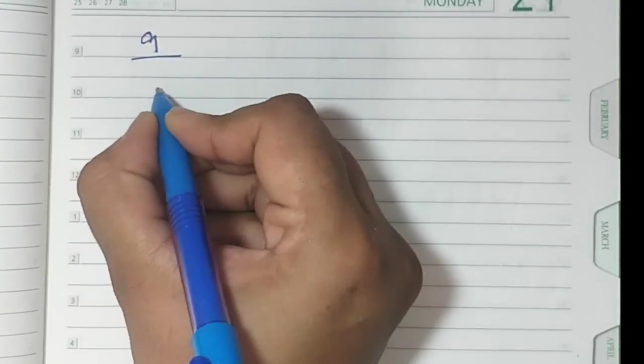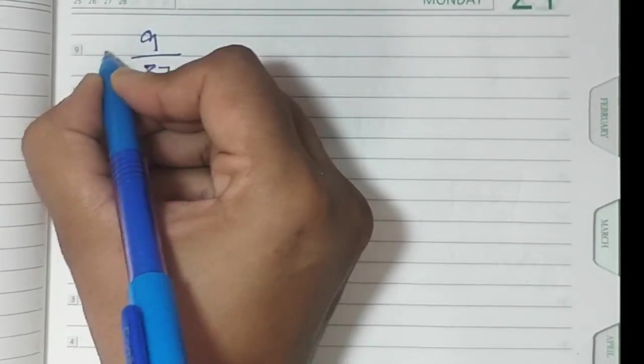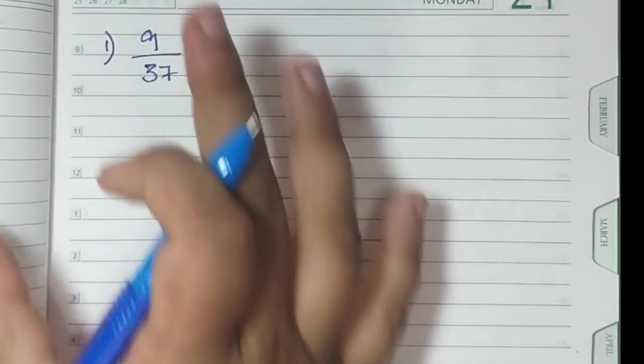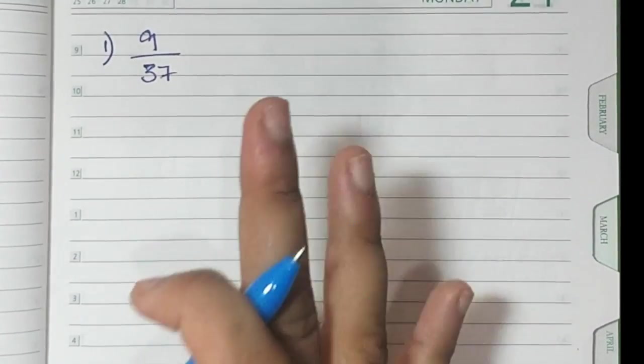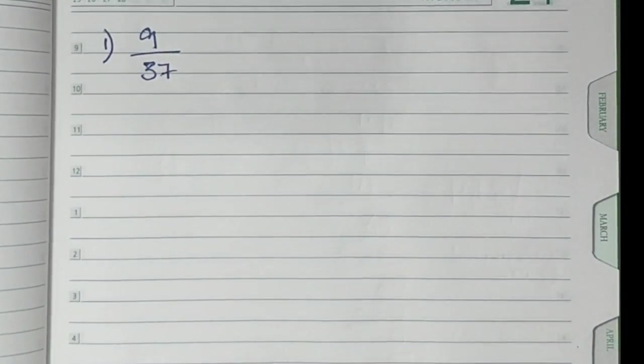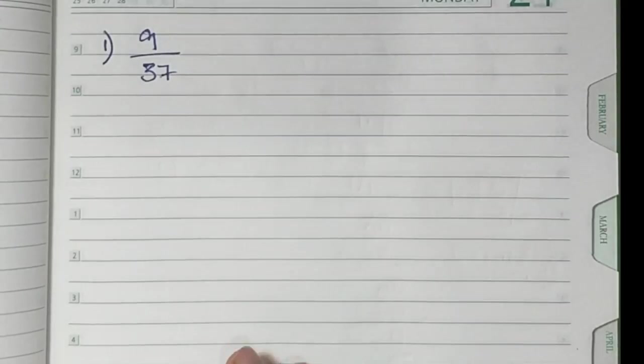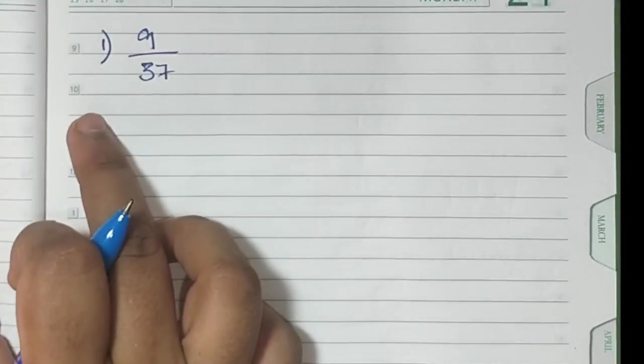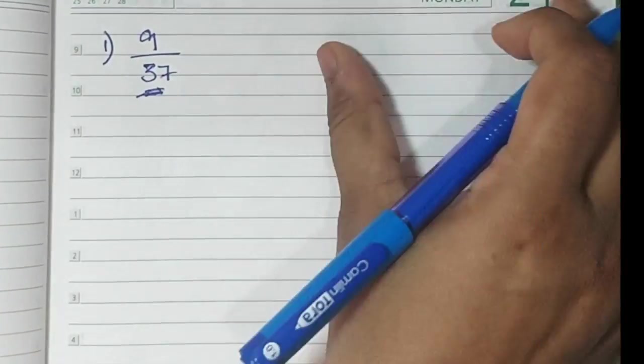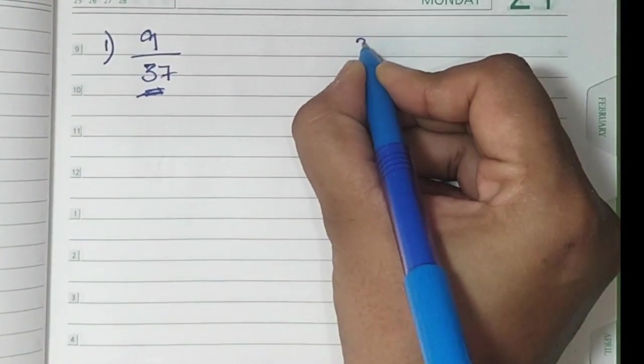You have an example in your book, that example is of 9 upon 37, the first example. When you solve a sum like this, when you are asked to write this particular rational number in decimal form, first see the denominator and write its table besides.